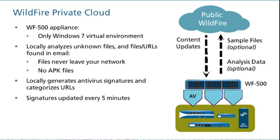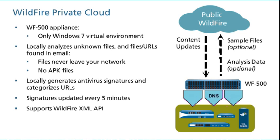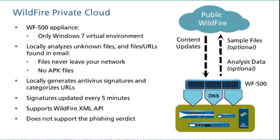However, you can choose to automatically forward malware files to the Wildfire public cloud for signature generation. In this case, the Wildfire public cloud reanalyzes the file, generates a signature to identify the malware, and distributes the signature worldwide. You also can choose to send a malware report, but not the actual file. The WF500 appliance supports the Wildfire XML API. The WF500 appliance does not support the phishing verdict; any email URL link discovered with malicious or phishing properties is given a verdict of malware. Daily content updates for the WF500 appliance provide additional cloud intelligence, which provides more accurate results.